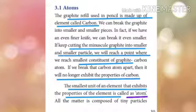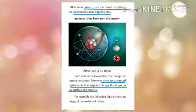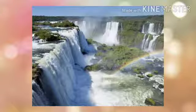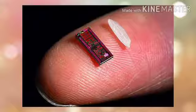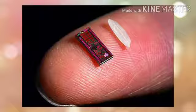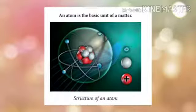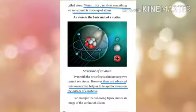All matter is composed of tiny particles called atoms. Water, rice — in short, everything we see around us is made up of atoms. Water in its liquid state is filled with atoms, and rice, a solid particle, is also filled with atoms.